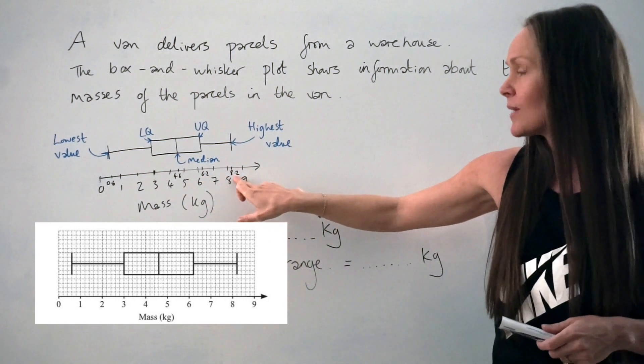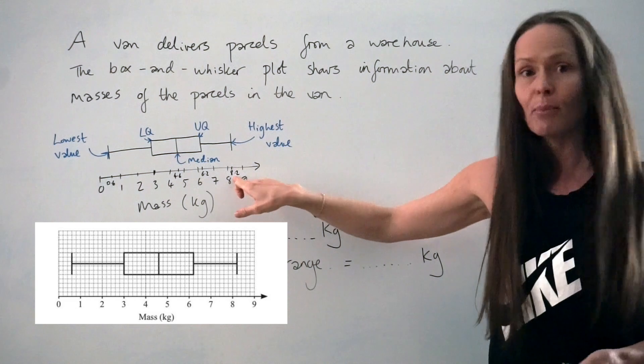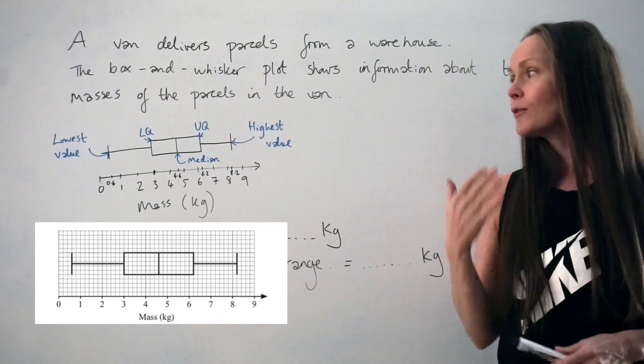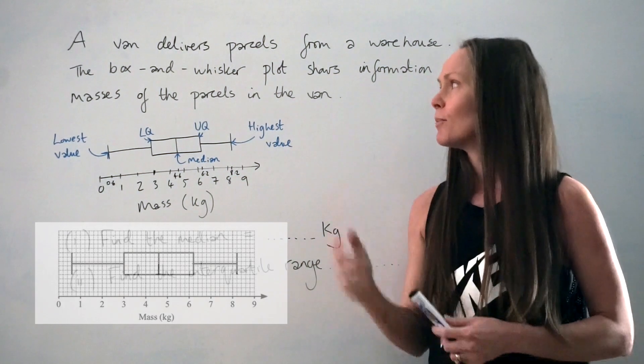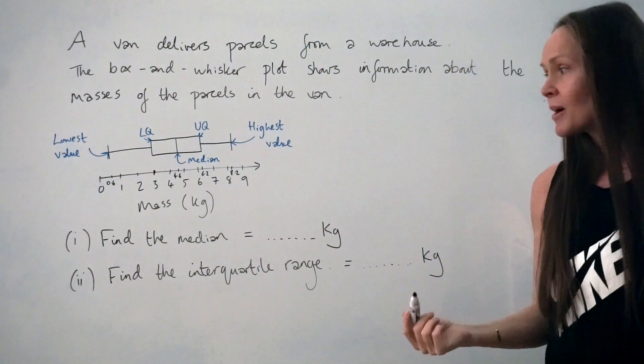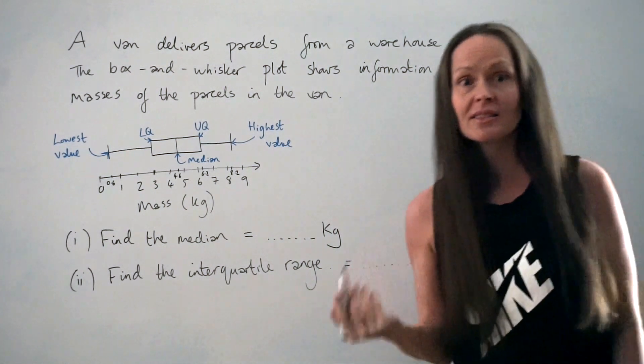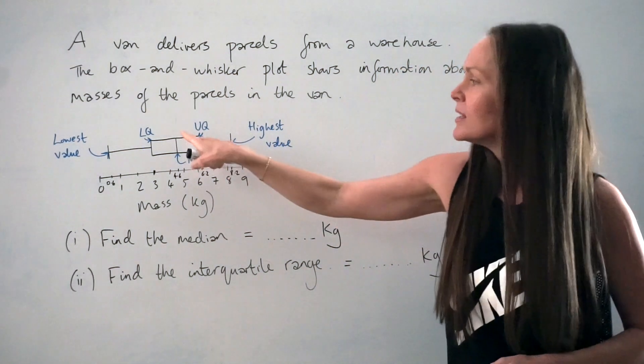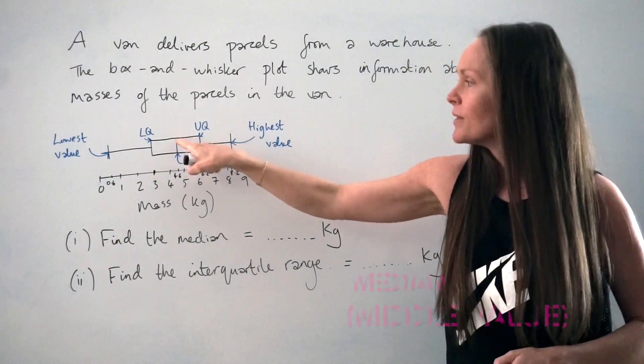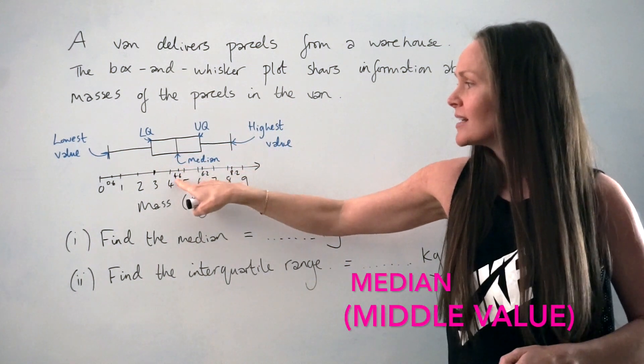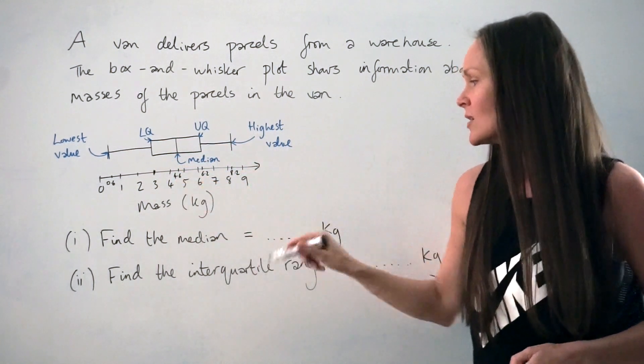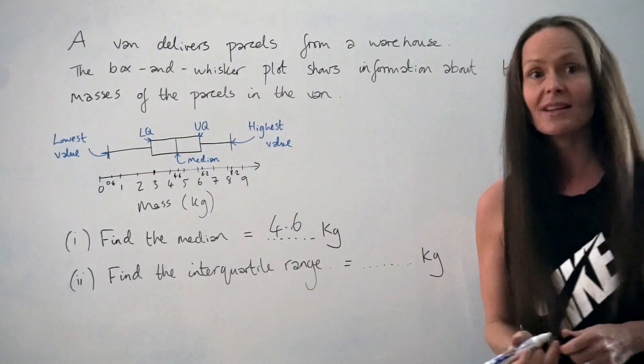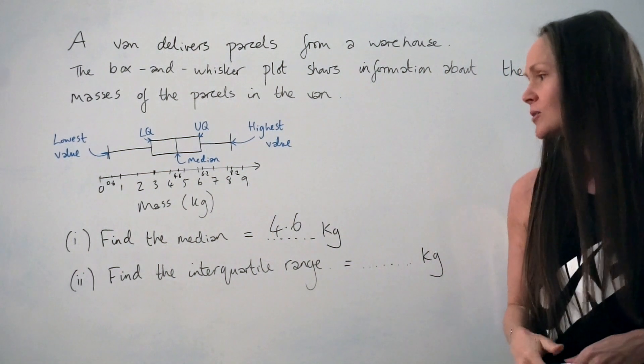And finally, the highest value, highest mass is 8.2 kilograms. So they're the five important points on this box and whisker plot. The first part of the exam question asks us to work out the median. We've already talked about this part. The median is the line within the rectangle and it's in line with 4.6, so the median is 4.6 kilograms for the mass of parcels.